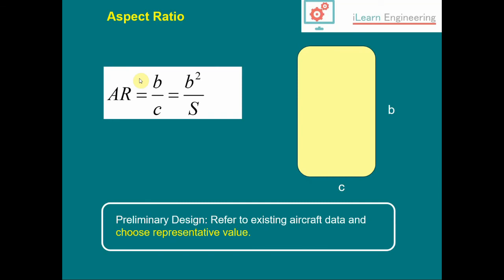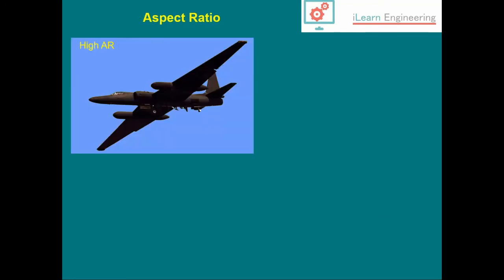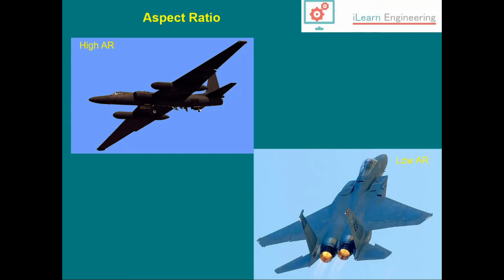The key for obtaining values of aspect ratios for your preliminary aircraft design is to refer to existing aircraft data and choose a representative value, just as we did in earlier videos. If you look at our earlier videos for wing loading and thrust loading, we tabulated values and you'll see various patterns, so it's not unreasonable to take a representative value. Here's a quick example of what high aspect ratio and low aspect ratio aircraft look like.